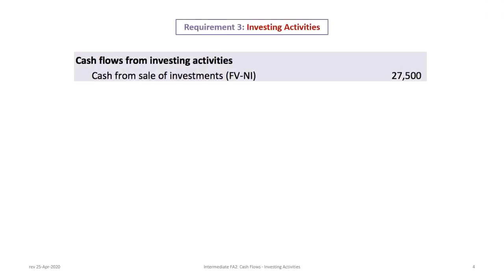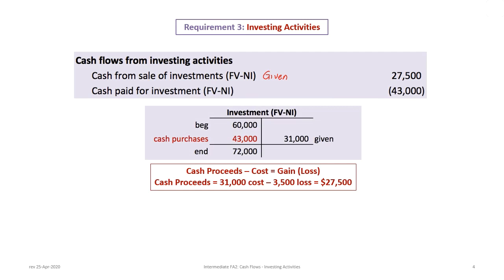First, in the cash flows from investing activity section, we have cash from sales of investments. Some information is already provided — specifically cash from sale of fair value net income investments. We then need to determine whether any cash was paid for investments purchased. To do this, we reconstruct the T-account for the fair value net income investment. We have a beginning balance of $60,000 and an ending balance of $72,000 from the balance sheets. The $31,000 here is the cost of the investments that were sold, and this is given.